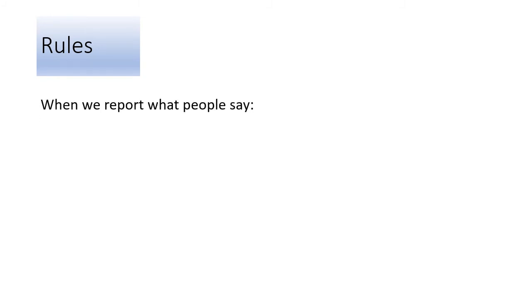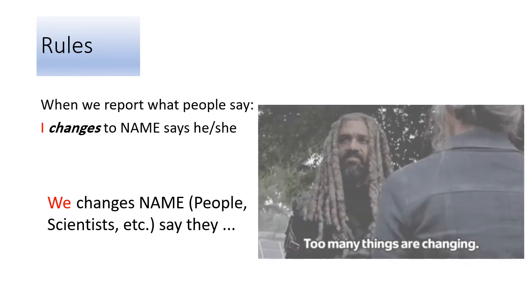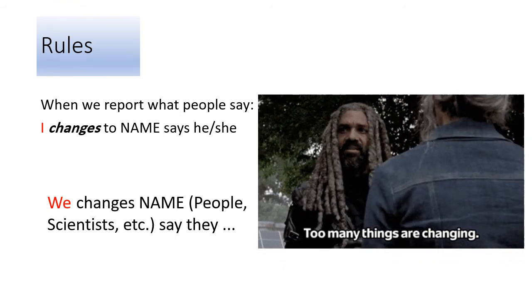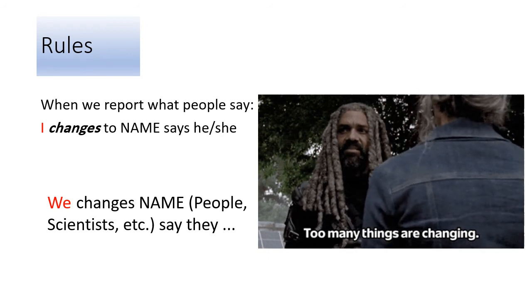Let's have some rules. When we report what people say — عندما ننقل ما قاله الناس — I changes to a name, or he says, or she says. We changes to a name like 'people,' 'scientists,' etc., or they. Yes, too many things are changing — فيها تغييرات كتيرة نهتم فيها. Am I right?